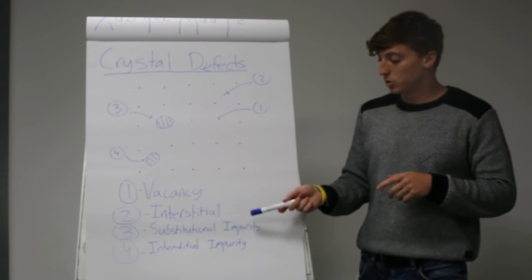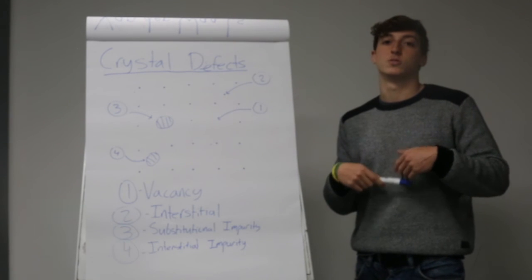And secondly, we can use substitutional impurities, such as number 3, to create semiconductors that we use in the real world today.